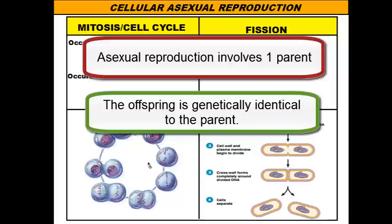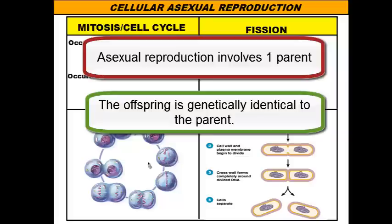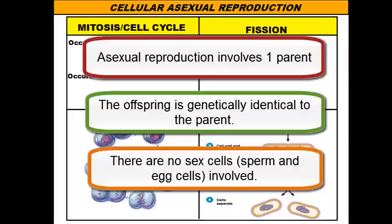You're not genetically identical to either one of your parents. And third, since there is only one parent involved, there's no use of sex cells such as sperm and egg cells — so there's no fertilization going on.